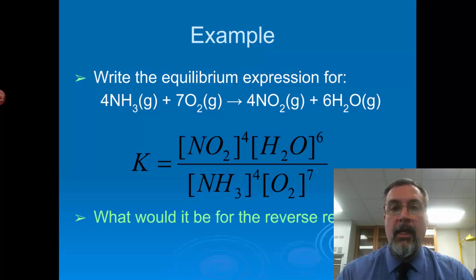What about for the reverse reaction? What would it be? Easy. Flip it. Take the reciprocal. Because in the reverse reaction, ammonia and oxygen are products, so they go on top, and NO2 and H2O are reactants in the reverse reaction, so they go on the bottom. So you just take the reciprocal.